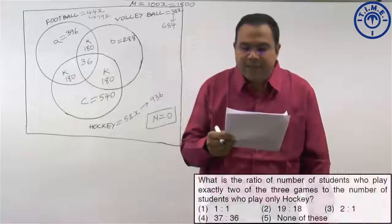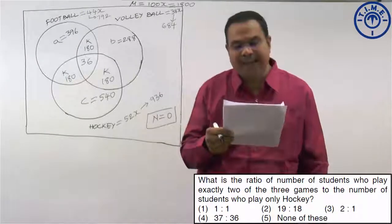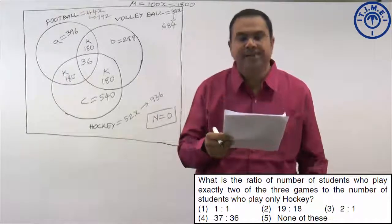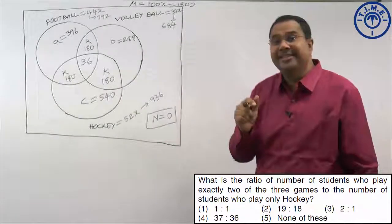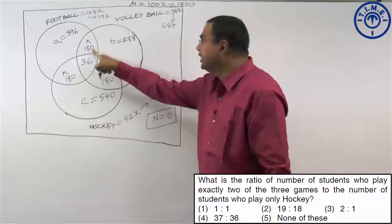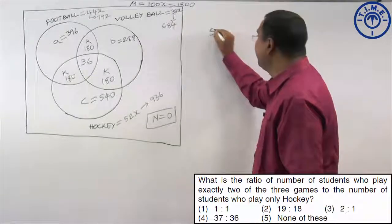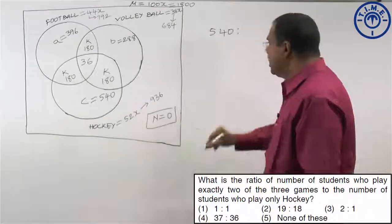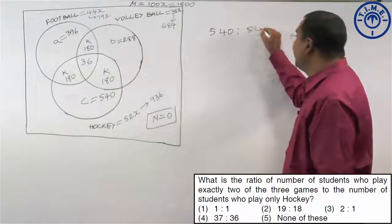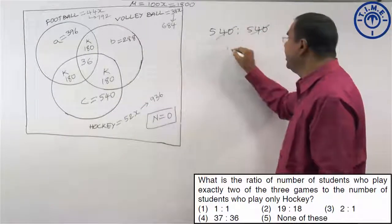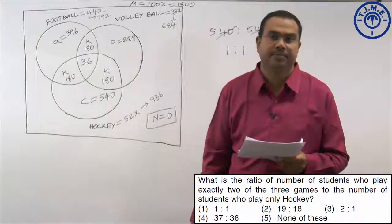Next question: what is the ratio of students who play exactly two of the three games to students who play only hockey? Students playing exactly two games: 180 plus 180 plus 180 equals 540. Students playing only hockey: 540. So the ratio is 540 to 540, which is 1 to 1. This is present in the first option.